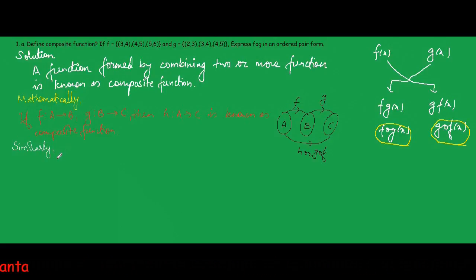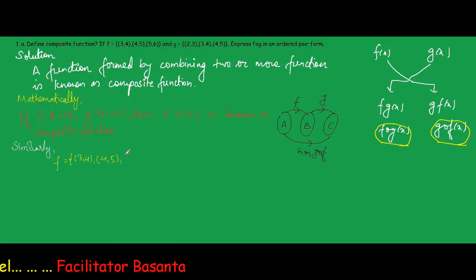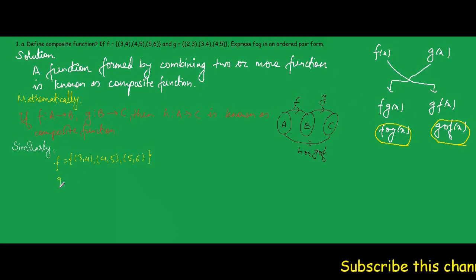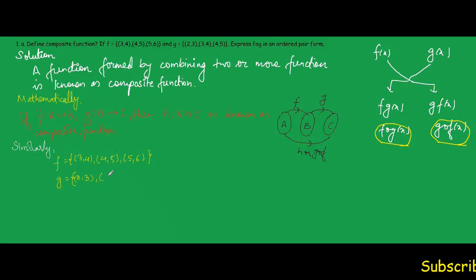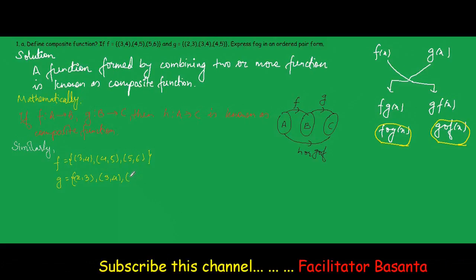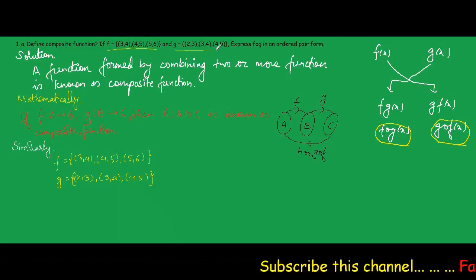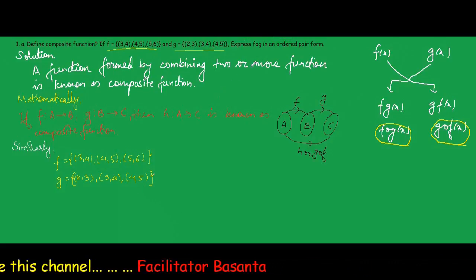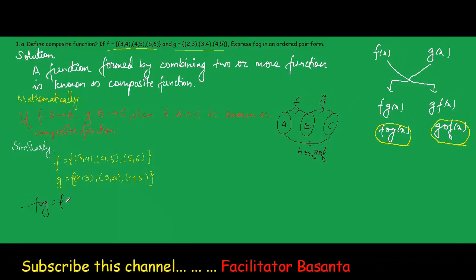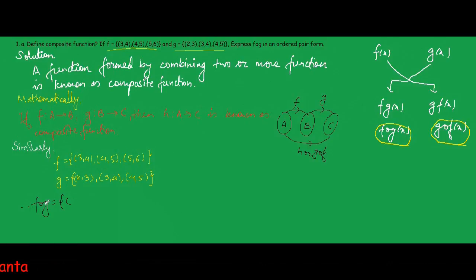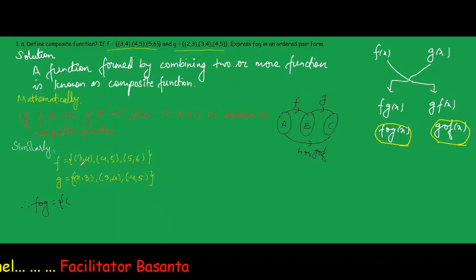So, function f equals {(3,4),(4,5),(5,6)} and function g equals {(2,3),(3,4),(4,5)}. By the help of these two functions, we need to find the ordered pairs of fog. Therefore, fog means function g is followed by function f, so the range of function g should be the domain of function f.